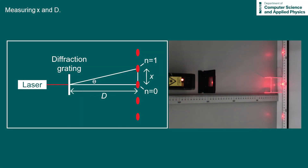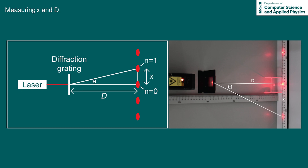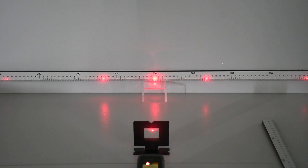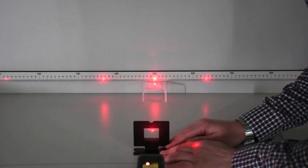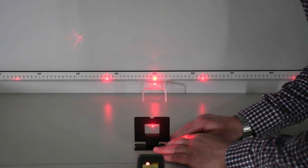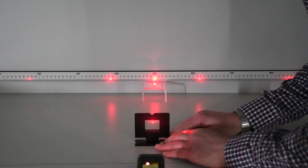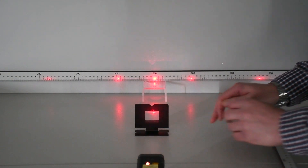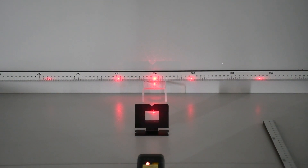A note on measuring x and d: our aim is to get a value for theta. We can make our measurements more accurate by also measuring x using the first order on the right-hand side, and then using the average value of x to solve for theta. Once measurements are complete, we can adjust the position of the diffraction grating to change the value of d, which changes the spacing between the orders and allows us to calculate a new value for the wavelength.